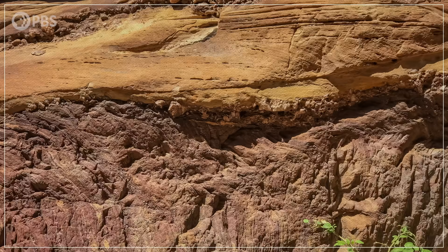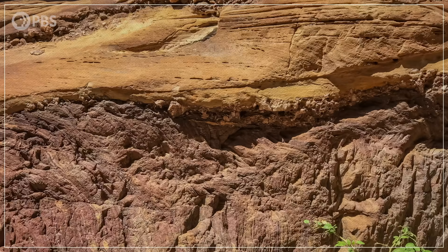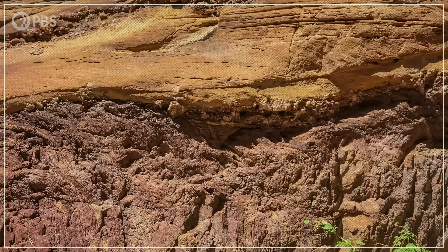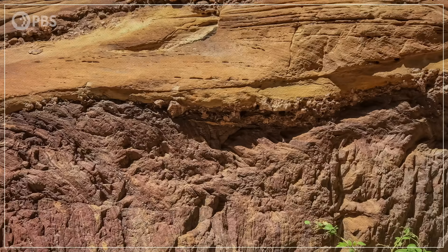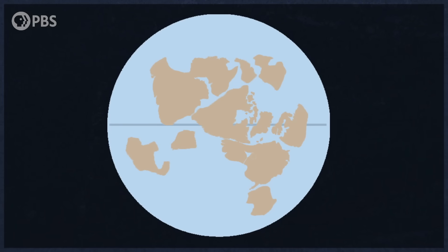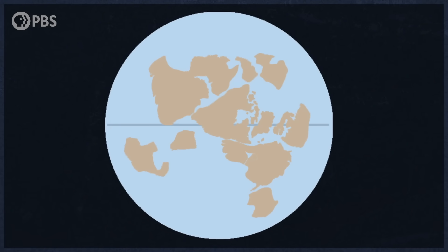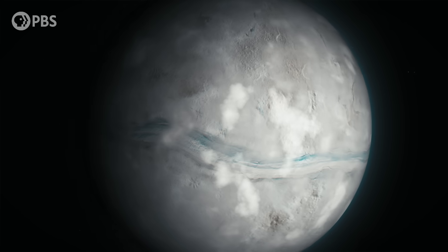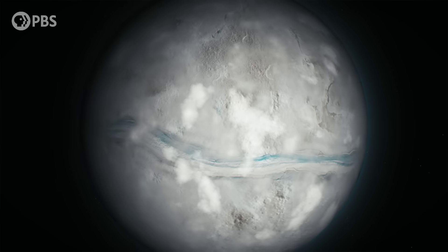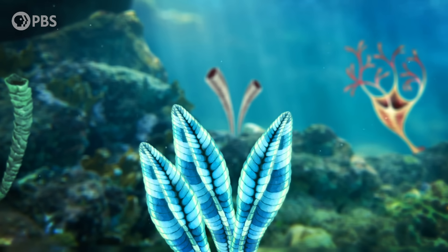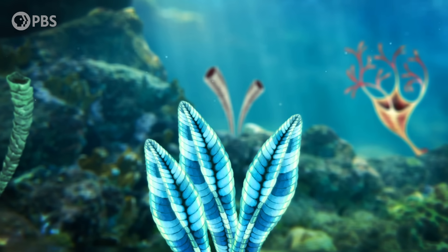And the Grand Canyon isn't the only place where this happens. You can see the gap from Siberia to Antarctica, and plenty of spots in between. Scientists are still trying to figure out what caused the Great Unconformity, but they have some ideas. This missing chapter in Earth's history might be linked to a fracturing supercontinent, out-of-control glaciers, and maybe the diversification of life itself.